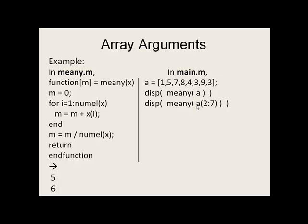But we can also send down a subset of a if we want to. Here we send the second through seventh element. So 5, 7, 8, 4, 3, 9. We send this 1 by 6 array into x. So x now becomes a 1 by 6. But this function still works because we said that we are going to go from i equals 1 to numel x. So numel x in this case will be 6. So this function is general for any sized array that we pass down to it, and it will calculate the mean.